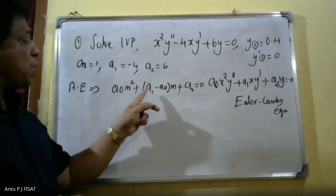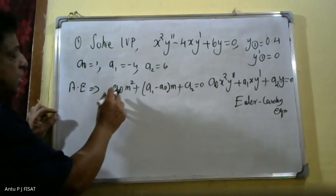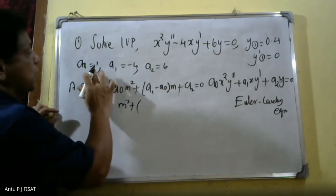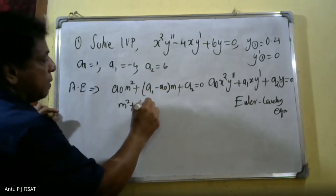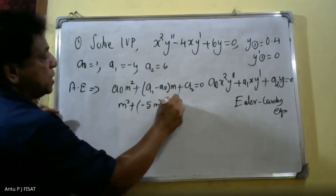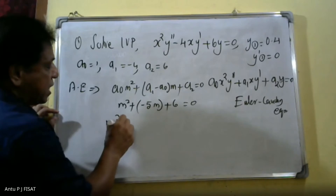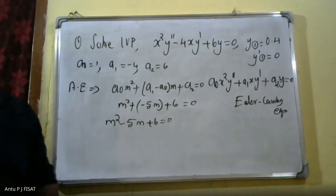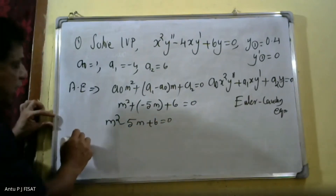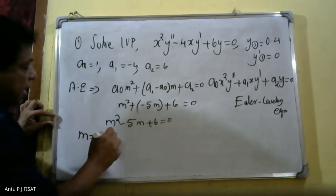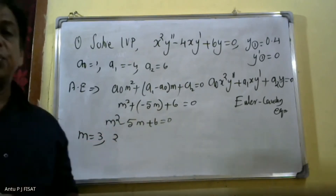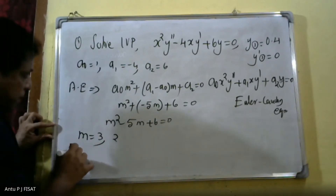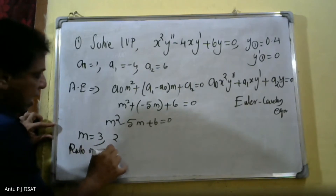Substituting the values a₀ = 1, a₁ = −4, a₂ = 6, we get: m² + (−4 − 1)m + 6 = 0, which simplifies to m² − 5m + 6 = 0. Solving this quadratic equation, we get m = 3 and m = 2. The roots are real and distinct.